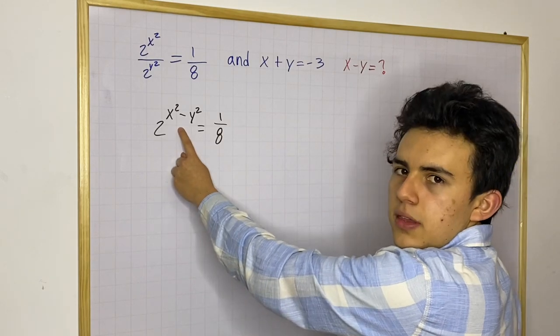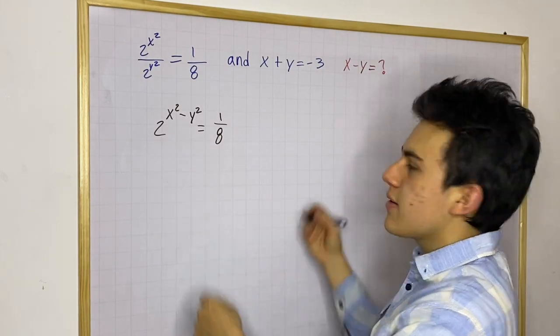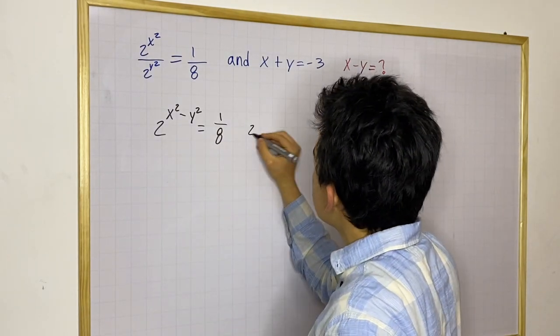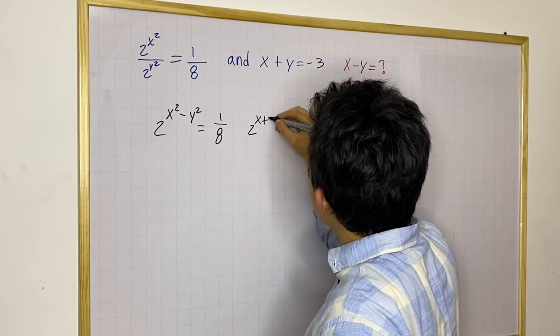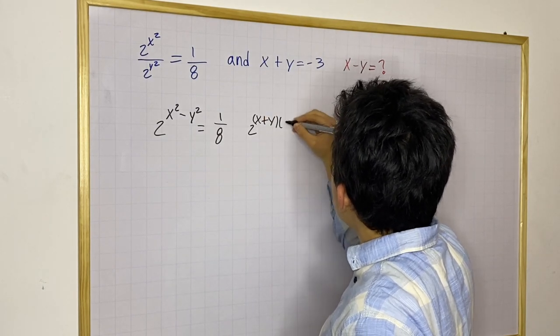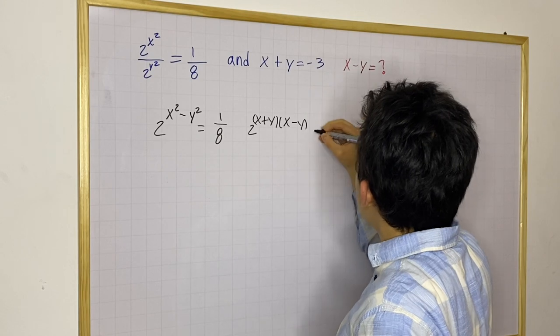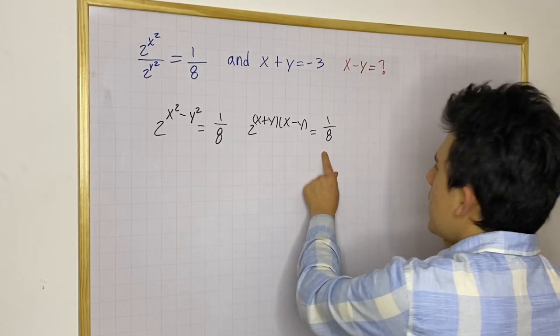Now, you know what this is, that it's a difference of squares. So we can rewrite this as 2 to the x plus y times the conjugate. And this is going to be the same as 1 over 8.